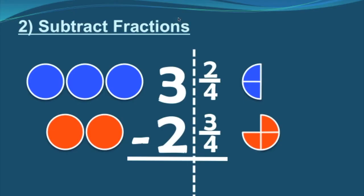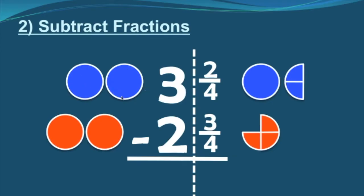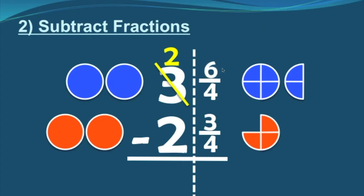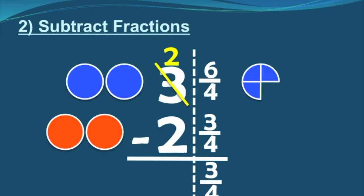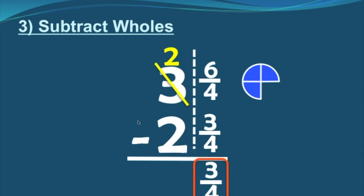When I borrow, I'm going to borrow from the wholes spot. I take a whole from the three, so that three becomes two. Both denominators are out of four, so I turn that borrowed whole into four over four. Now instead of two fourths minus three fourths, I have two fourths plus four fourths, which gives us six fourths. Six fourths minus three fourths gives us three fourths. Step three: subtract the wholes — two minus two leaves us with nothing, so I just leave that blank. My final answer is just three fourths.